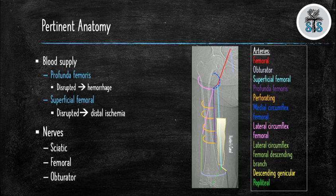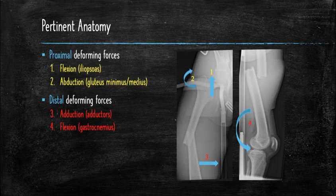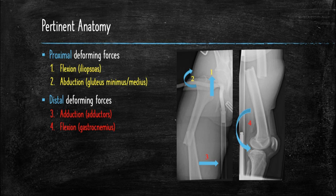There are three major nerves to be aware of: the sciatic, the femoral, and the obturator nerves. There are several deforming forces that act on the femoral shaft. The iliopsoas causes flexion as it attaches to the lesser trochanter. The gluteus minimus and gluteus medius cause abduction when attaching to the greater trochanter. The distal fragment is deformed by the adductors, which cause adduction, and flexion by the gastrocnemius. Understanding these forces is pertinent as they can hinder your reduction in the operating room.